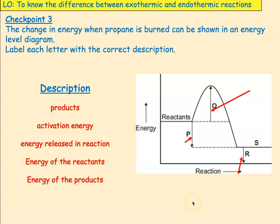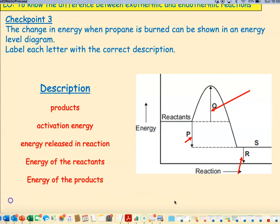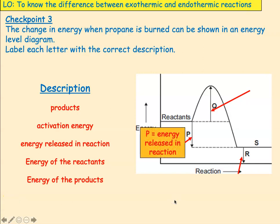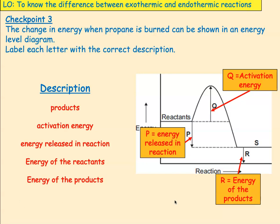Here's our third checkpoint. Label each of the points on the graph — P, Q, R, and S — with descriptions: products, activation energy, energy released in the reaction, energy of the reactants, or energy of the products. P is the energy released in the reaction. Q is the activation energy. R is the energy of the products. And S is where you put the products.